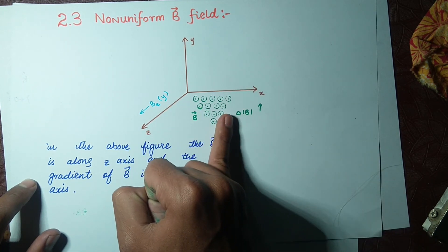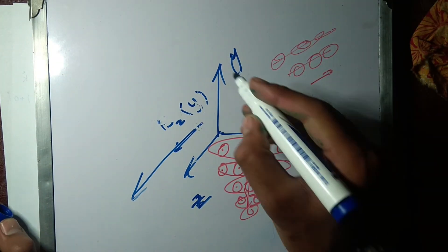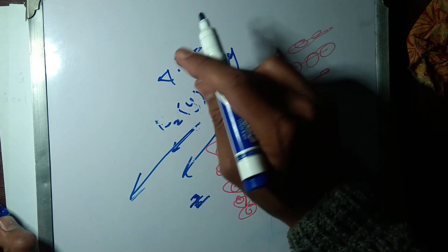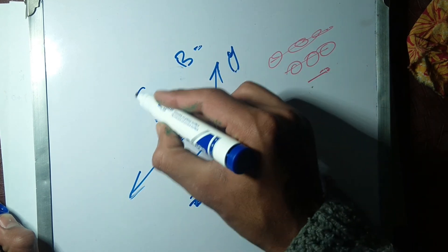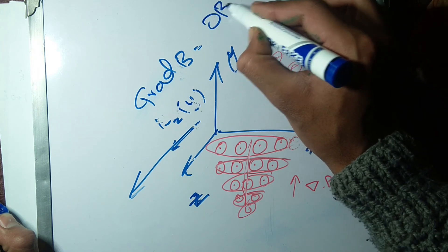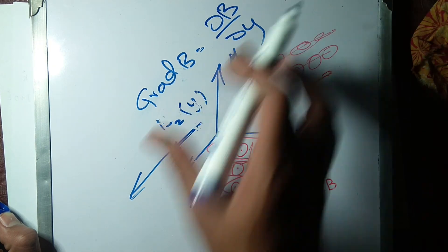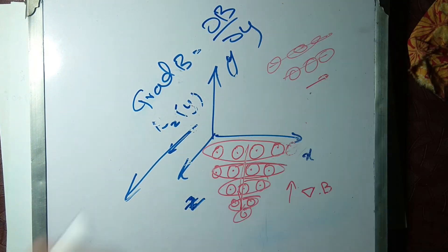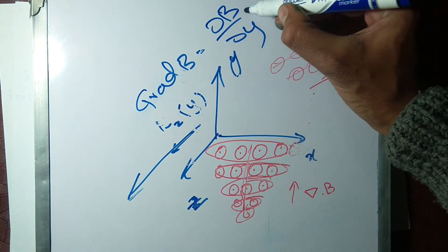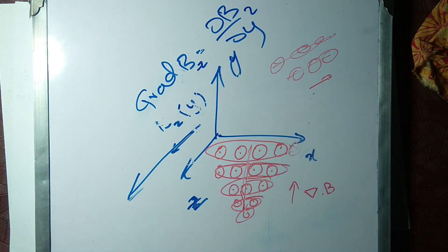We call this the gradient of B. We write it as del dot B (∇B), and the gradient of B equals ∂B/∂y. Why is it equal to ∂B/∂y? Because there is a change in B_z with respect to y. This is the gradient of B.